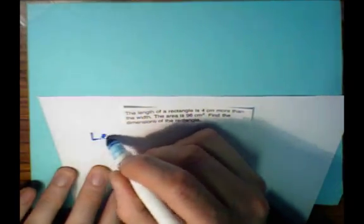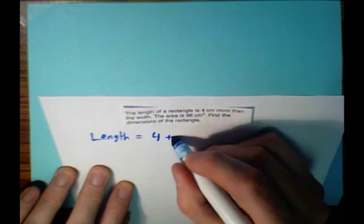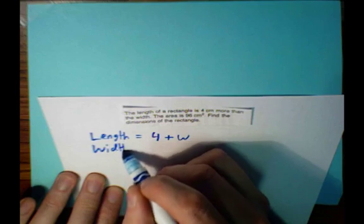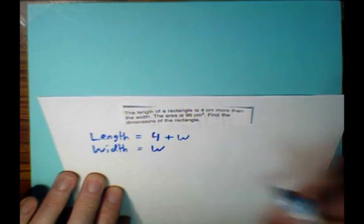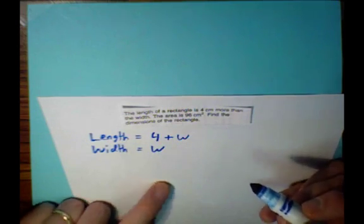Here it says the length is 4 centimeters more than the width. The width, we can just have W. Please notice that both my quantities, length and width, are expressed in terms of W.